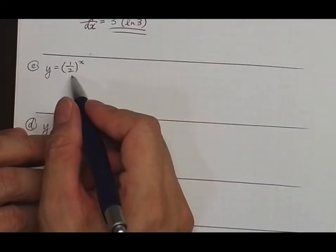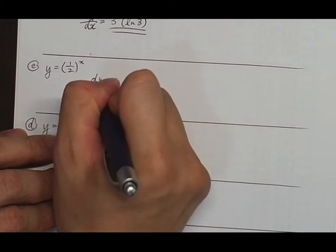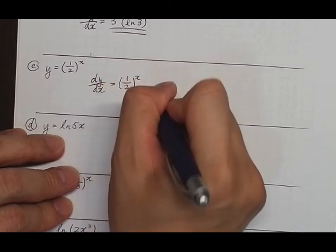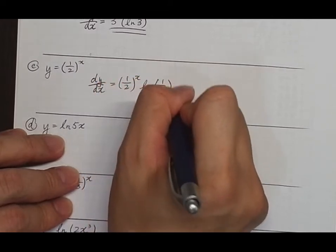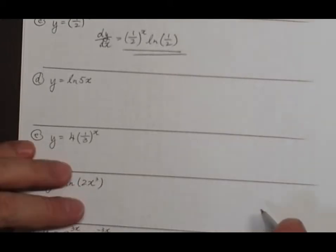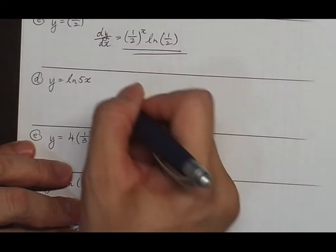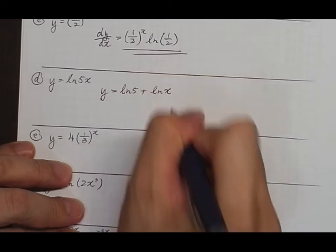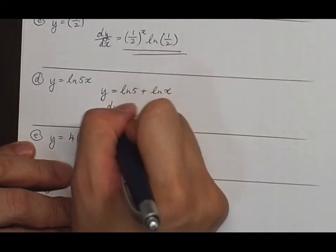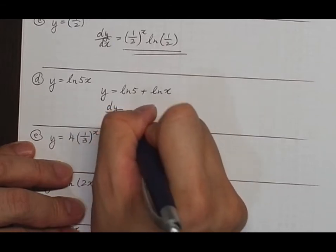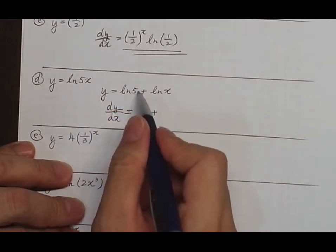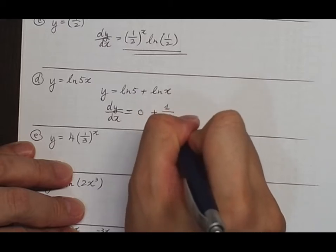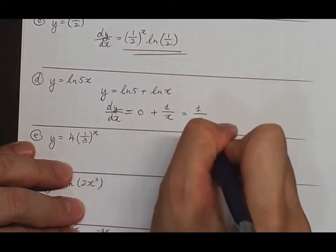Part c: if y equals (1/2) to the power x, then dy/dx equals (1/2) to the power x multiplied by log(1/2). Part d: if y equals log(5x), then y equals log 5 plus log x, so dy/dx equals 0 plus 1/x, which equals 1/x.